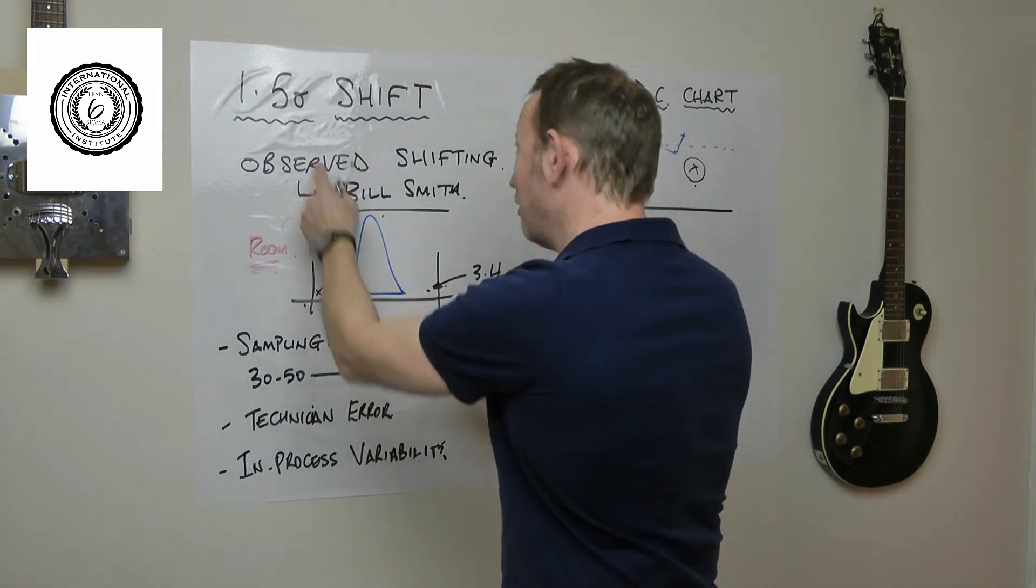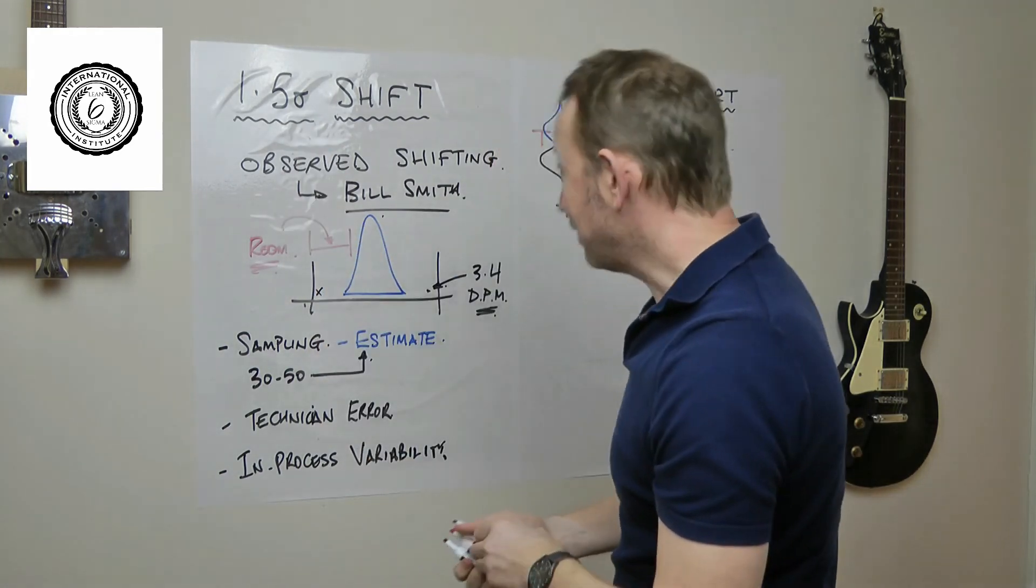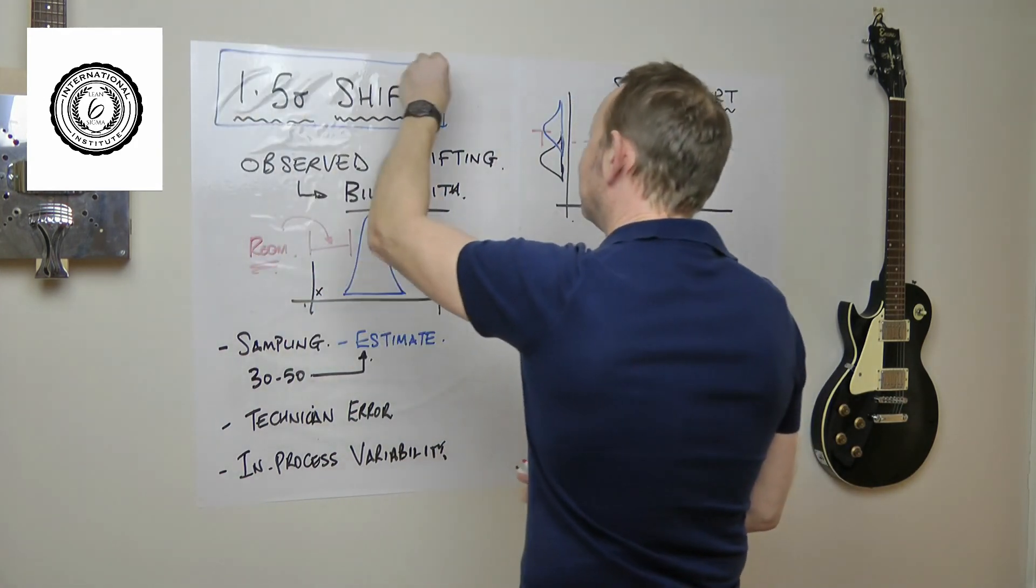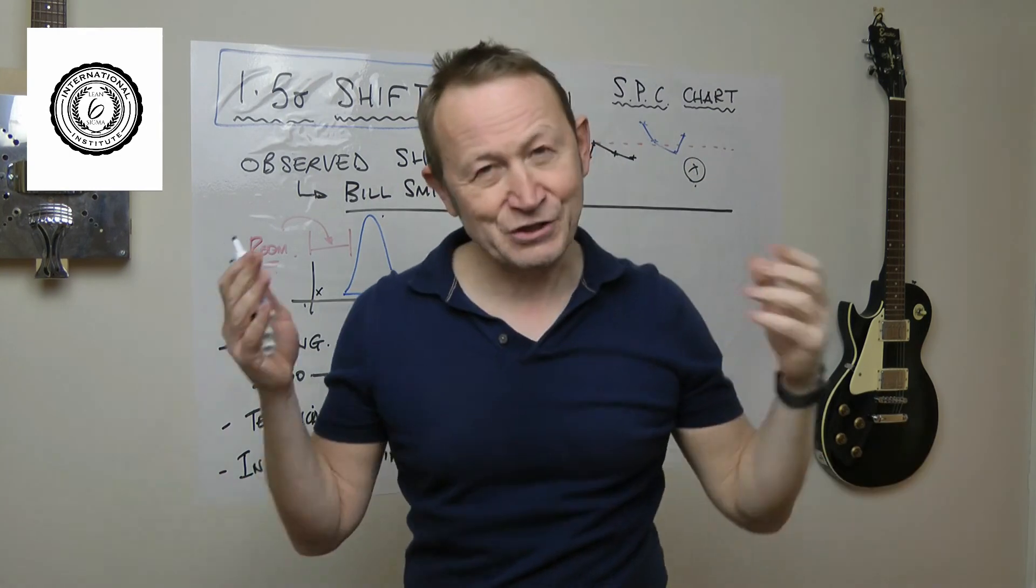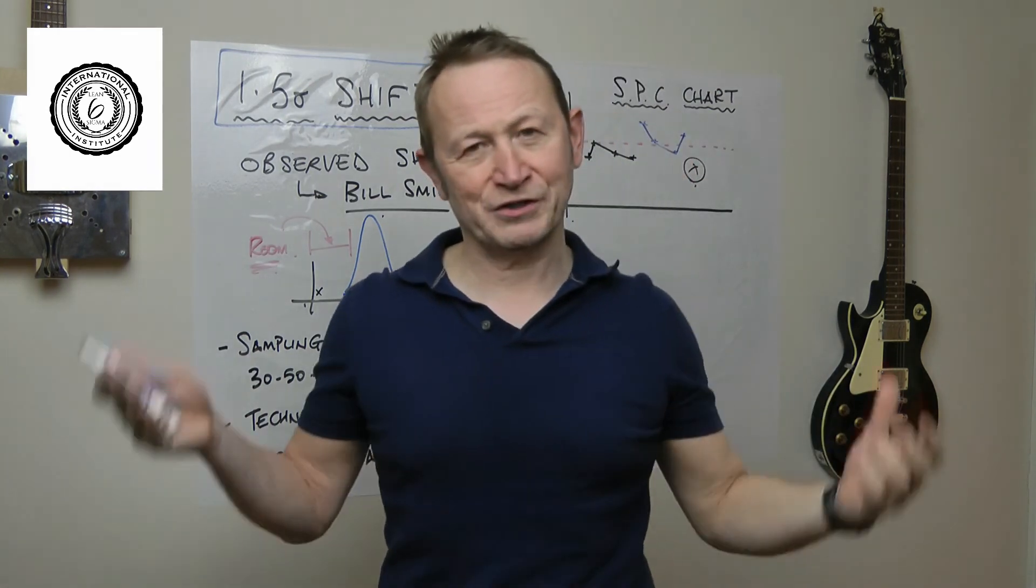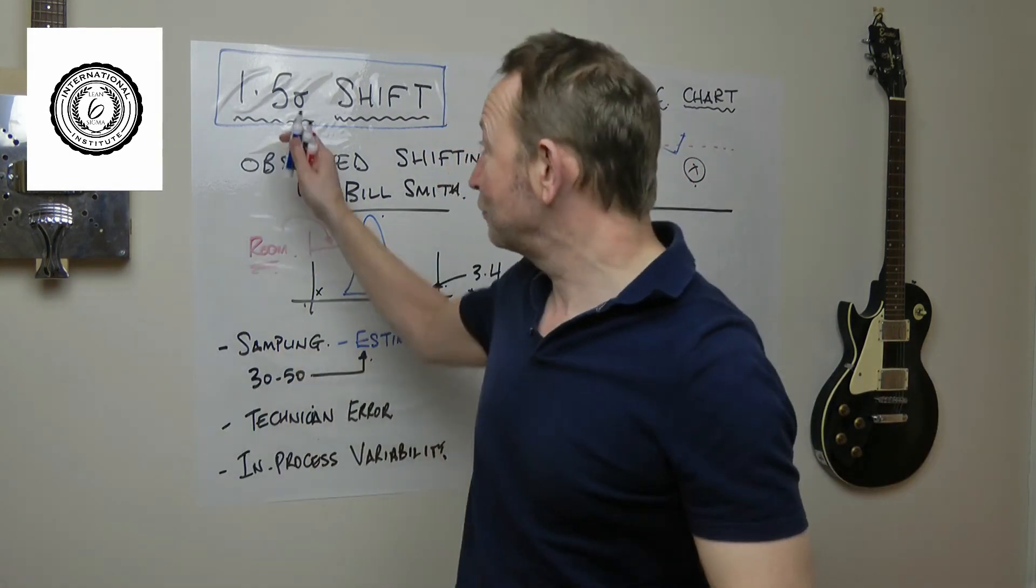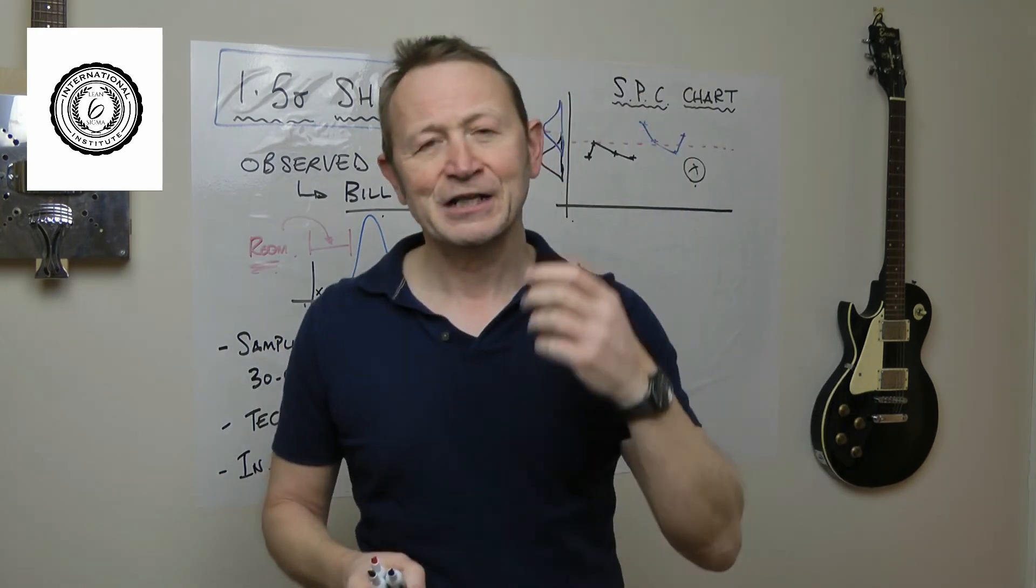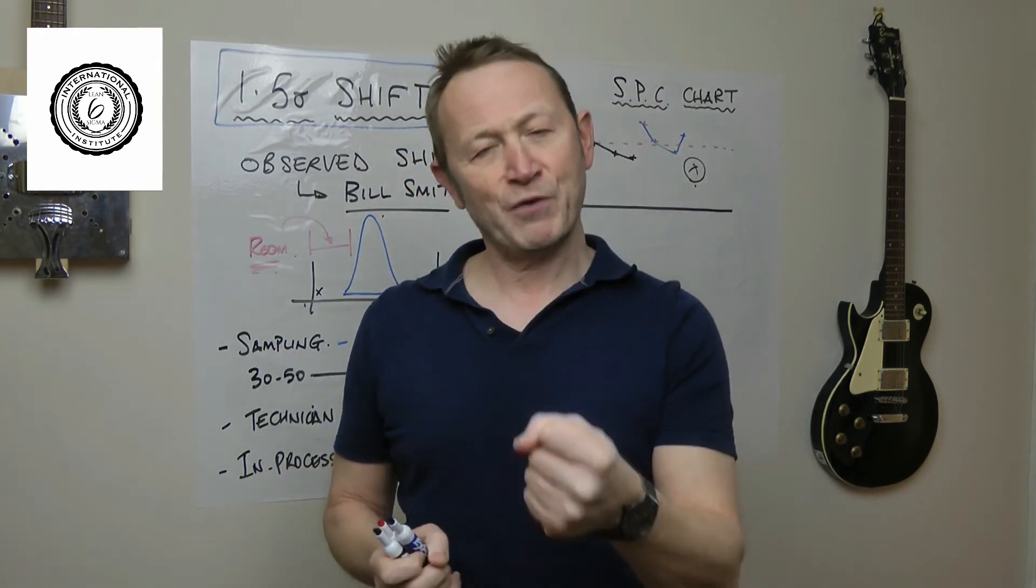This thing is wandering all over the place. Now Smith observed 1.5 sigma. Does that mean that your process wanders by 1.5 sigma? This was for Motorola and that's why they came up with the target of Six Sigma. Does that mean that your process does this?